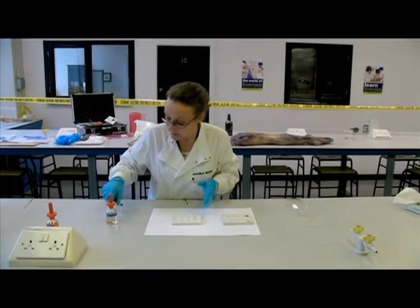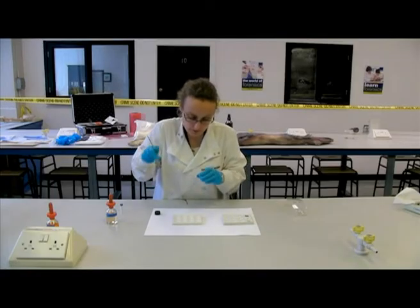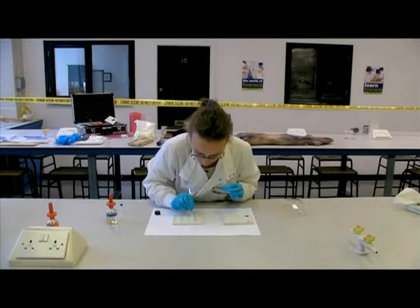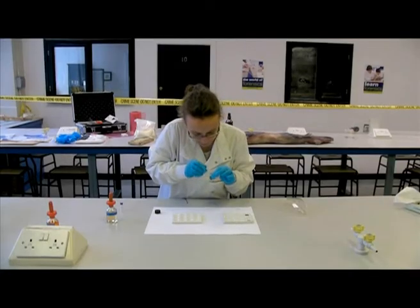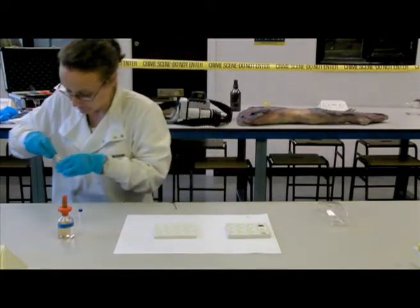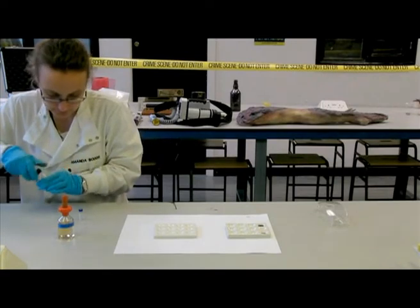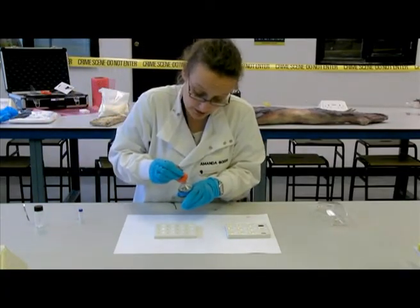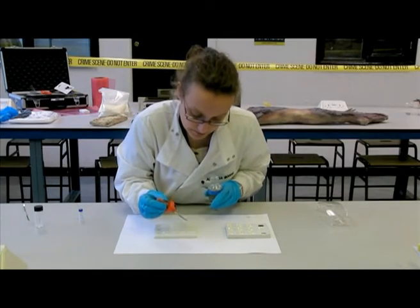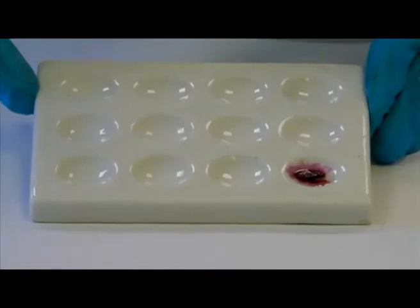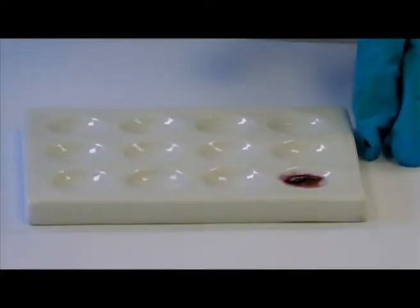So this was our test for amphetamine. Now I'm going to move on to test our street drug which we think is heroin. So again we take a small amount of our sample and put that into the well plate. And we're going to be using the marquis reagent. This nice purple color indicates to us that there is heroin present.